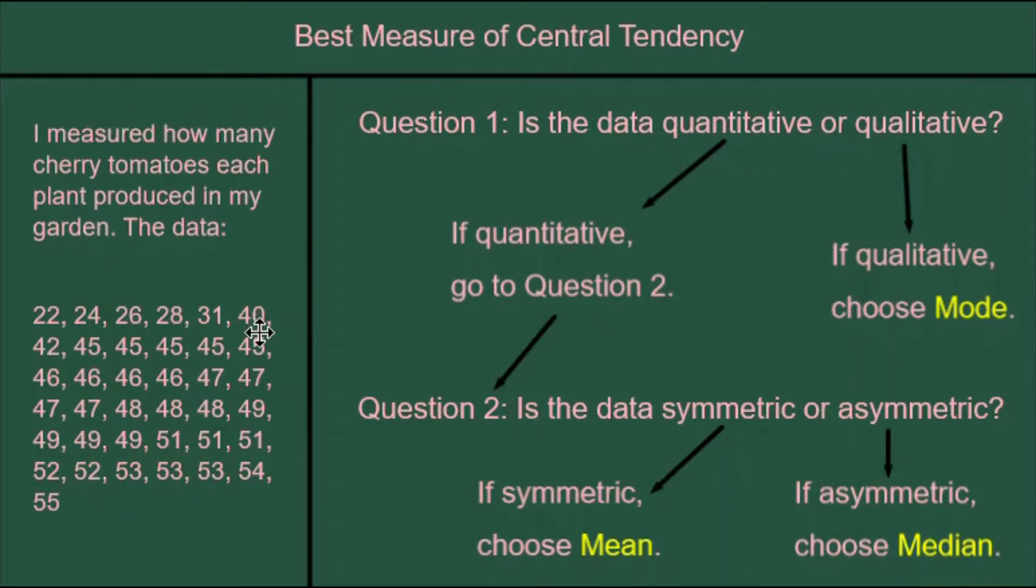We have 42, 40, then we skip all the way to 31, and then several in the 20s. So what that tells me is that there is a long tail on the left side, on the side with the lowest numbers.